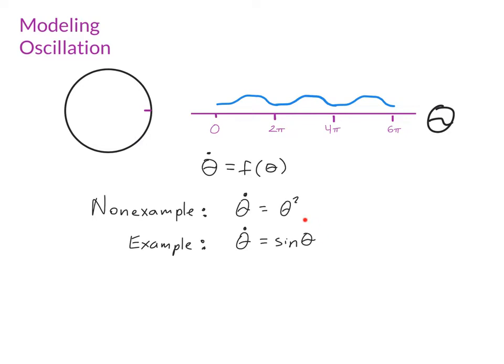For this example, sine theta is periodic. When I'm at a particular angle, it doesn't matter if I think about that location as 0 or 2 pi or 4 pi or 6 pi, sine theta is going to return the same value. And so d theta dt is well defined at every single point along the circle. That means that this is a good example of a vector field that can be interpreted in this way.